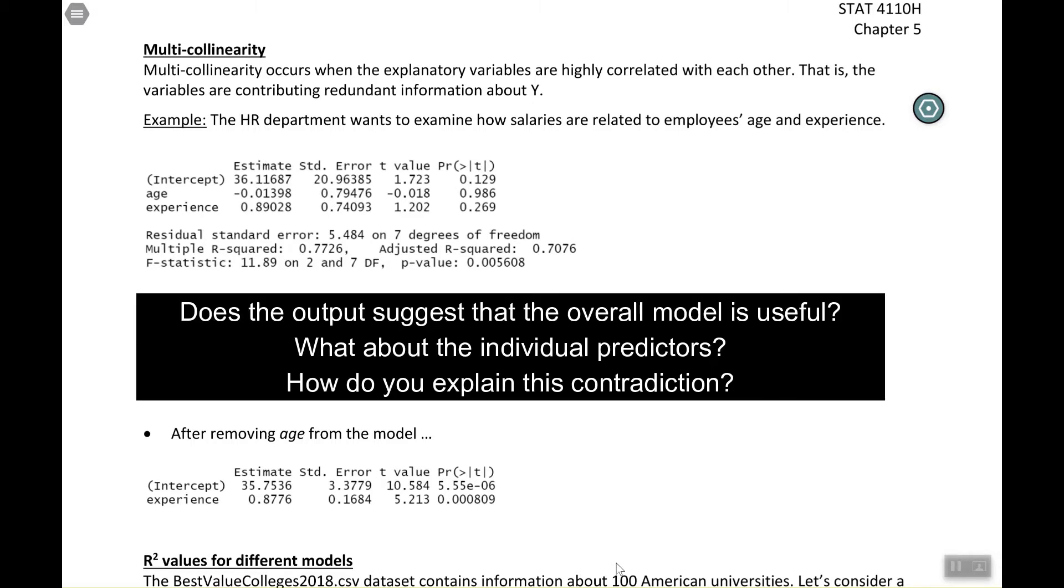But let's take a second to think about what this is saying. So first of all, what if you wanted to test the overall model to see if anything in the model is useful? What part of the output would you use and what would you conclude? And then what if you wanted to test each individual predictor to see if each predictor is useful? Again, what part of the output would you use and what would you conclude? So you should be getting sort of a contradiction from those two.